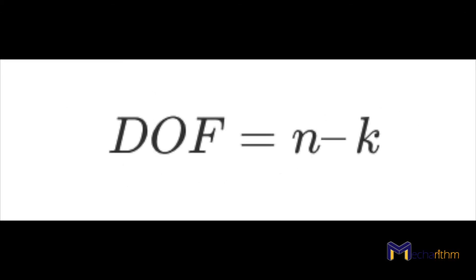The k independent constraints are called holonomic or configuration constraints, and they reduce the dimension of the C-space. The dimension of the C-space, or degrees of freedom, can be found by subtracting k from n, where k is the number of independent constraints and n is the dimension of the joint variable space.